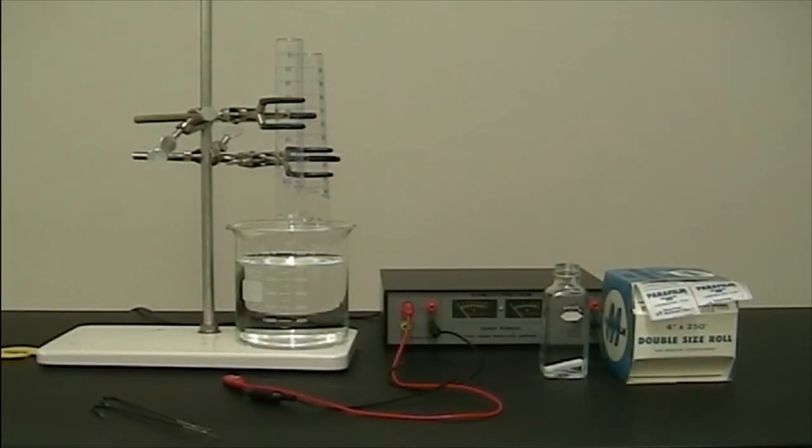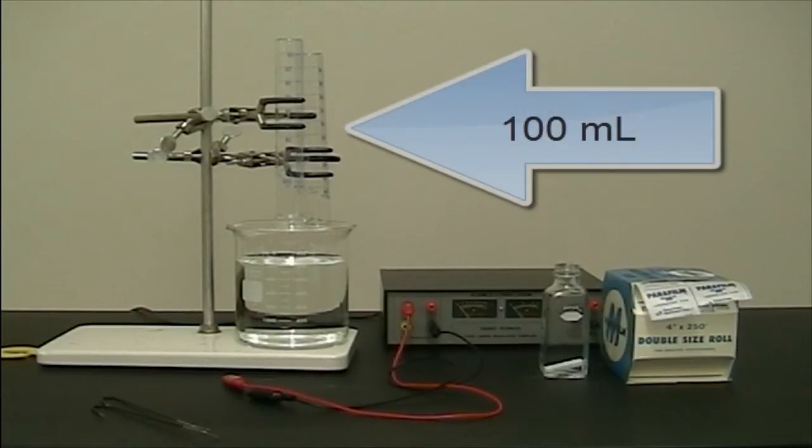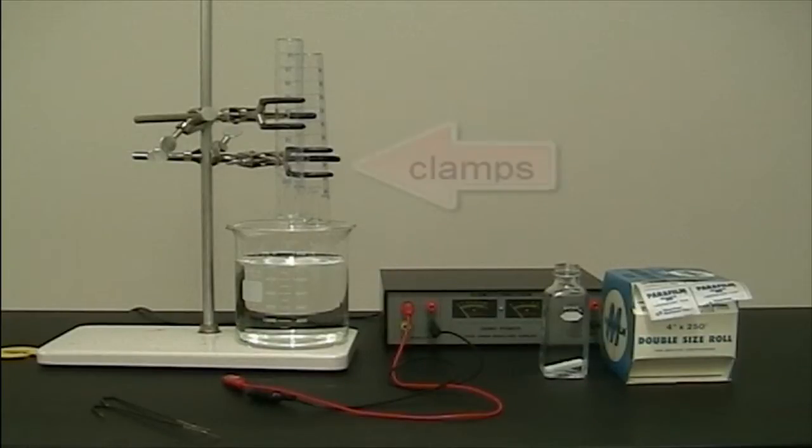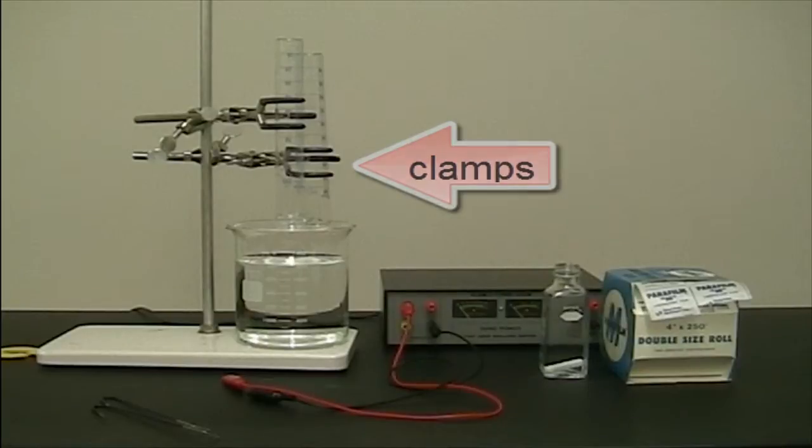To set up our large-scale electrolysis apparatus, a 1500 milliliter glass beaker was filled with 1200 milliliters of distilled water. Two 100 milliliter glass graduated cylinders, with their plastic bases removed, were then suspended into the beaker using two large 3-prong clamps attached to the same ring stand.